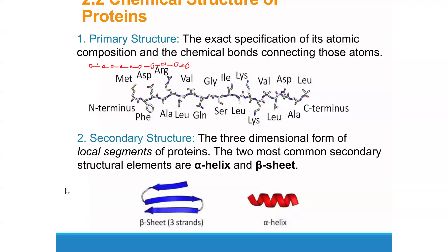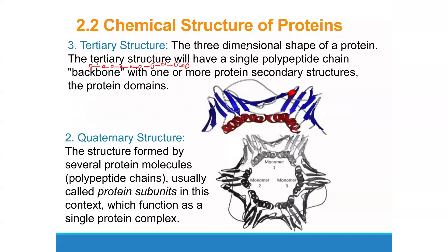The tertiary structure of proteins is a further folding of the secondary structure. This further folding is stabilized through hydrogen bonds, electrostatic forces, disulfide linkages, and van der Waals forces. These additional bonds and forces stabilize the tertiary structure of the protein.